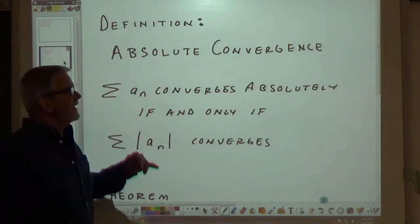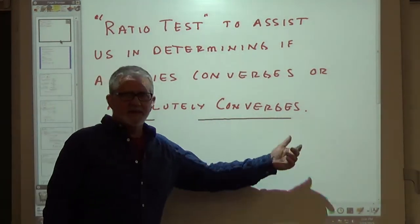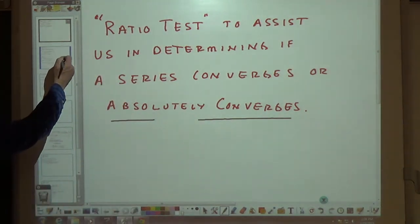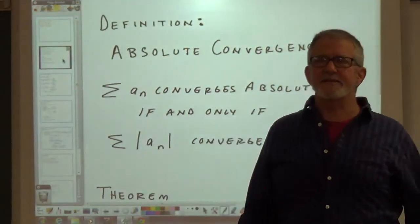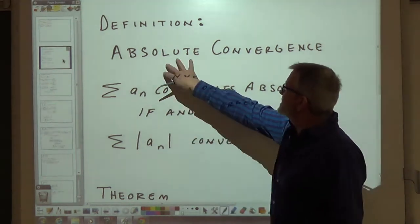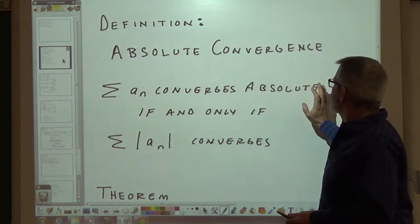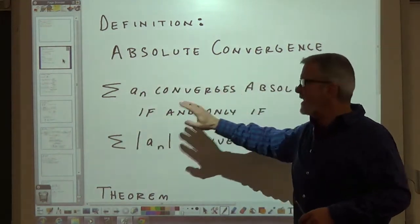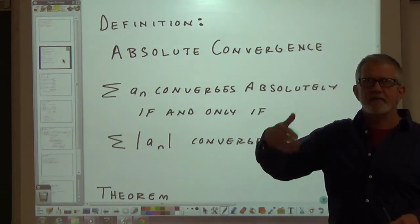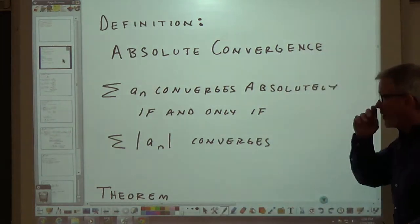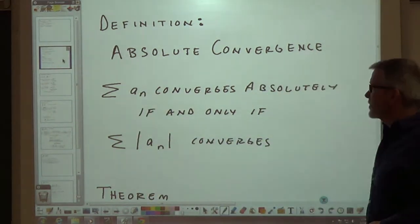First, we have a definition. What the heck is absolute convergence? We've got to keep this as simple as possible. A series converges absolutely if and only if the series of the absolute values of those terms converges. So if the absolute value of that series converges, then we say that series converges absolutely.